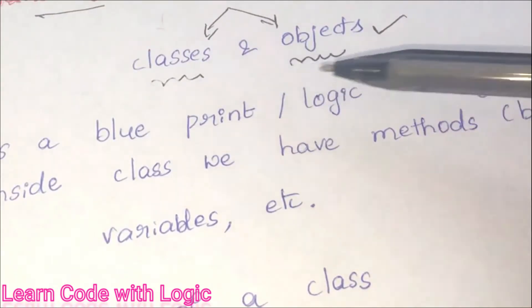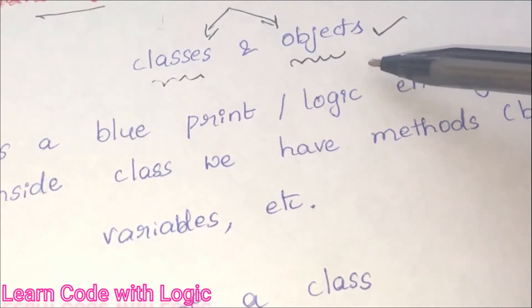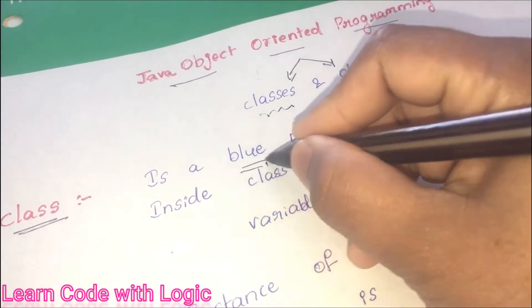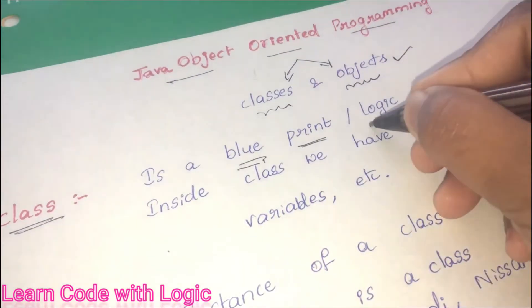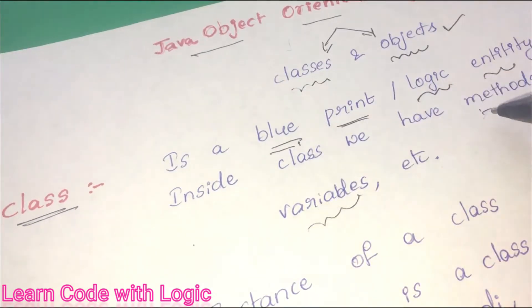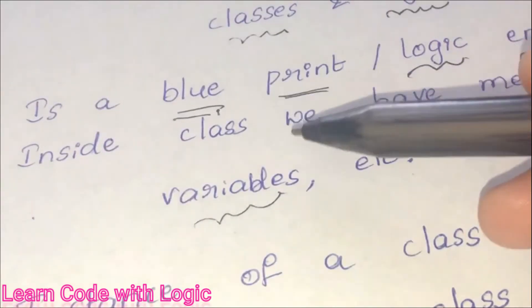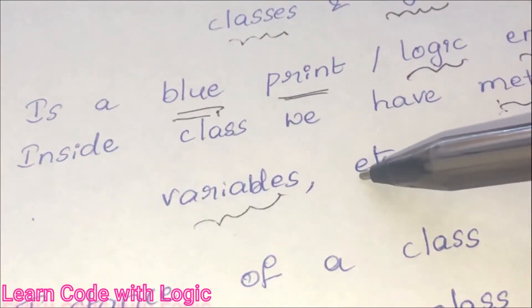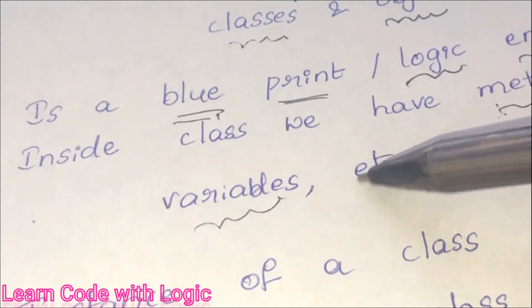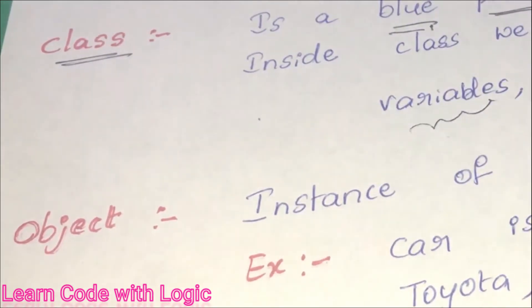Now let's understand one by one what is classes and objects in Java. Class is a blueprint or logic entity in Java. Inside class we can have methods and variables. Means in Java all the code is encapsulated inside the class.